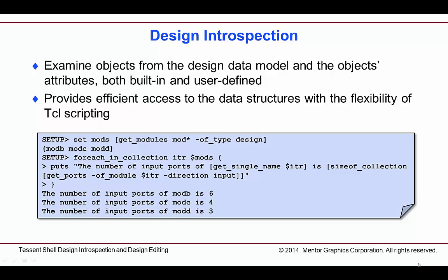The design's data objects have attributes, which can be built-in attributes or also user-defined attributes if you choose to add them. This example shows a number of introspection commands and how they can be used together to get information or to accomplish a task. Typically, GET commands are used as a way to efficiently search the design database for design objects. Once those objects are found, many different actions can be performed, such as reporting or editing.